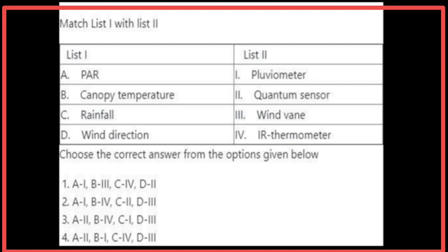Matching List 1 with List 2: Photosynthetically active radiation is measured by a quantum sensor. Canopy temperature is measured by an infrared thermometer. Rainfall is measured by a pluviometer. Wind direction is measured by a wind vane. The correct option is the third option.